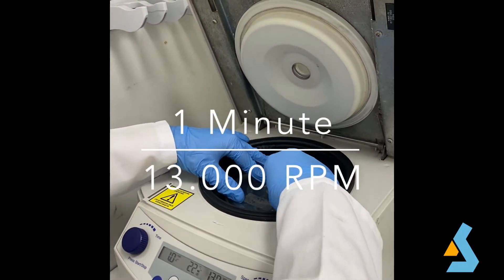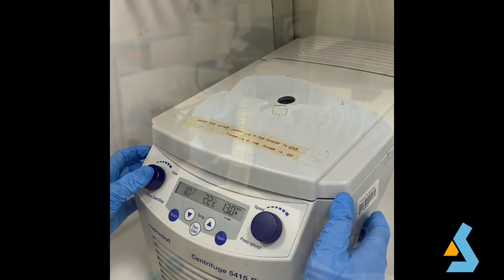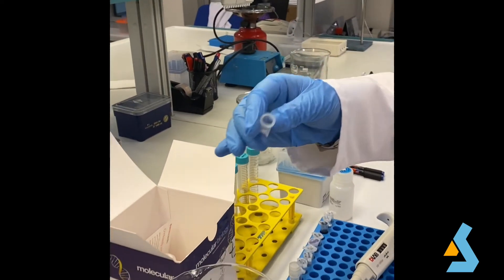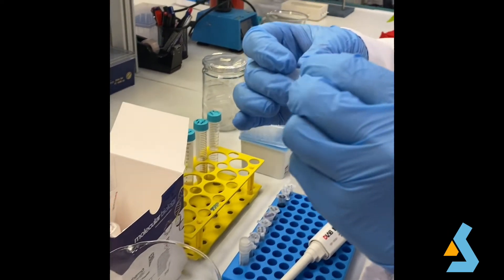The tube is centrifuged for one minute to bind the DNA to the silica membrane. After centrifuge, the bottom of the spin column tube is poured and the column is placed back into the same collection tube.